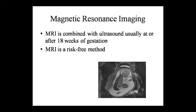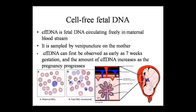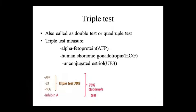MRI is the next non-invasive technique. Fetal DNA circulates in the maternal blood serum; you can obtain it through venipuncture. Cell-free fetal DNA can be observed from the 7th week of gestation onwards, and the amount of cell-free fetal DNA increases as the pregnancy progresses.